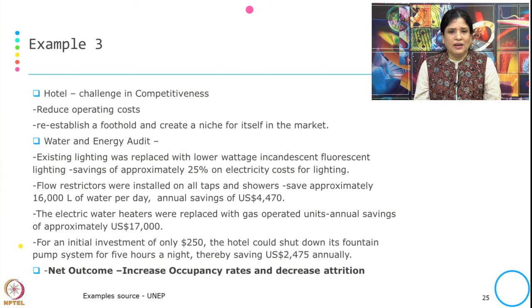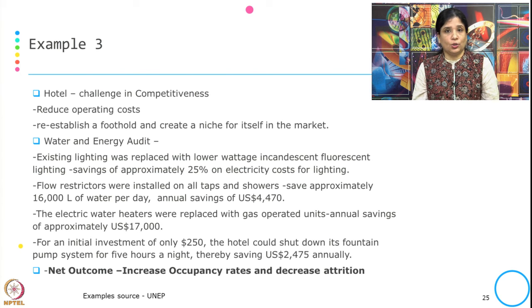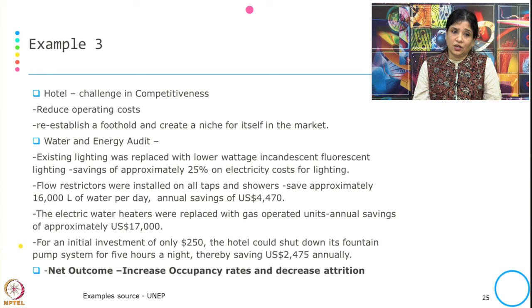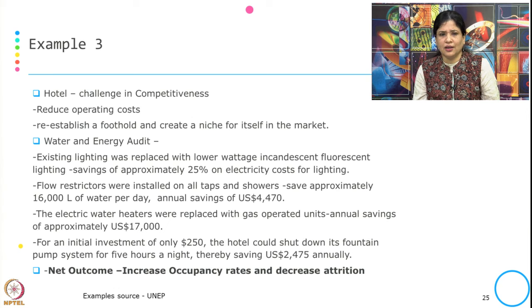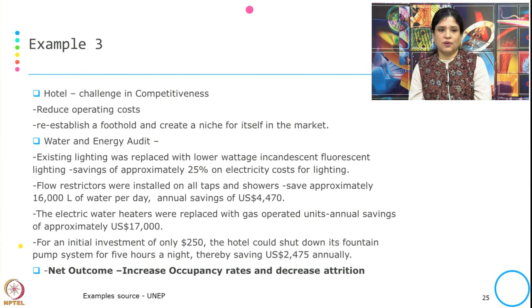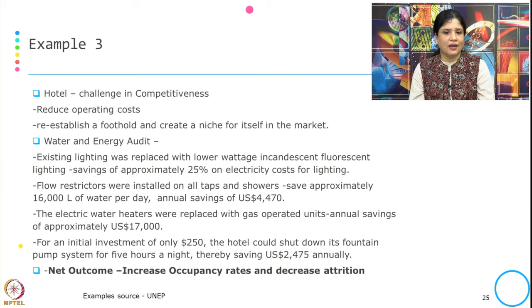After auditing, they made several changes. Existing lighting was replaced with lower-wattage energy-saving lighting, which saved almost 25 percent of the electric cost for lighting. They used flow restrictors on all taps and showers in the hotel, which saved almost 16,000 litres of water per day with a significant annual financial saving. They replaced electric water heaters with gas-operated units, achieving an annual saving of 17,000 US dollars. With an initial investment of 250 dollars, they shut down their fountain pump system for 5 hours at night, saving 2,475 US dollars annually.